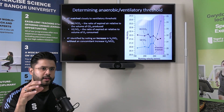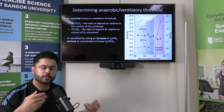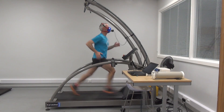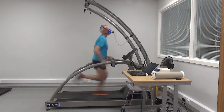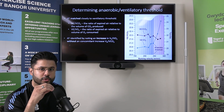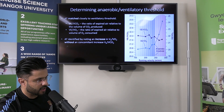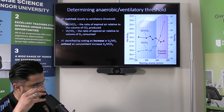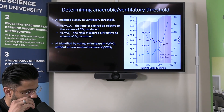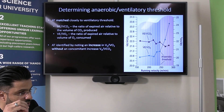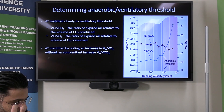One way to determine the anaerobic or ventilatory threshold in the laboratory is to do a submaximal incremental exercise test. A participant is hooked up on a treadmill or cycle ergometer with a mask, collecting the gases they breathe in and out — specifically the expired air. From that information, a graph is produced showing two values: the VE/VCO2, which is the ratio of expired air to the volume of CO2 produced, and the VE/VO2, the ratio of expired air relative to the amount of oxygen consumed.